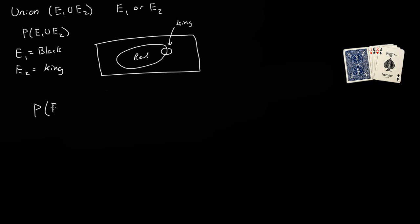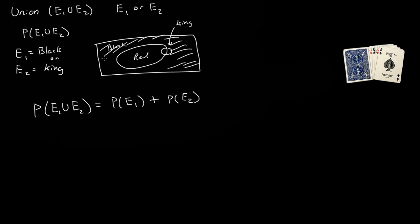To find the probability of E1 union E2, that equals the probability of getting a black card plus the probability of getting a king. We must subtract the intersection of event one and event two. The reason we subtract the intersection is because we're counting that overlapping area twice — once when we compute the black card probability, and again when we compute the king probability.